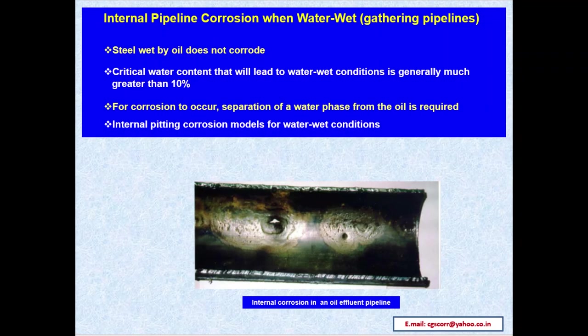Internal pipeline corrosion in water-wet gathering pipelines — the following are the criteria. Steel wet by oil does not corrode. Critical water content that will lead to water-wet conditions is generally much greater than 10%. For corrosion to occur, separation of a water phase from the oil phase is required. Internal pitting corrosion models for water-wet conditions are shown; the image at the bottom gives the view of internal corrosion in an oil pipeline, showing pitting due to erosion corrosion or microbiologically influenced corrosion.